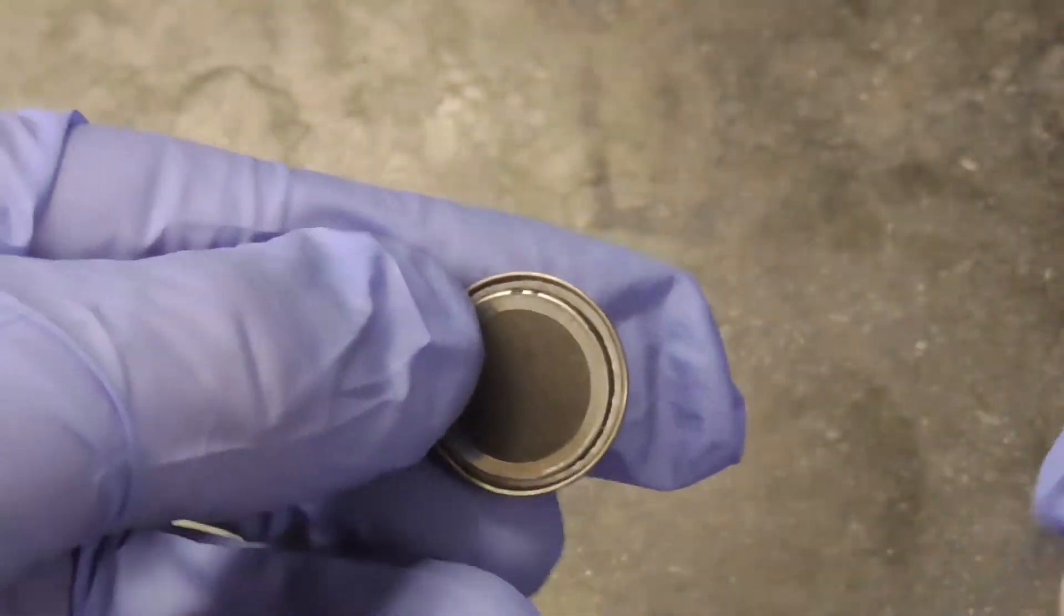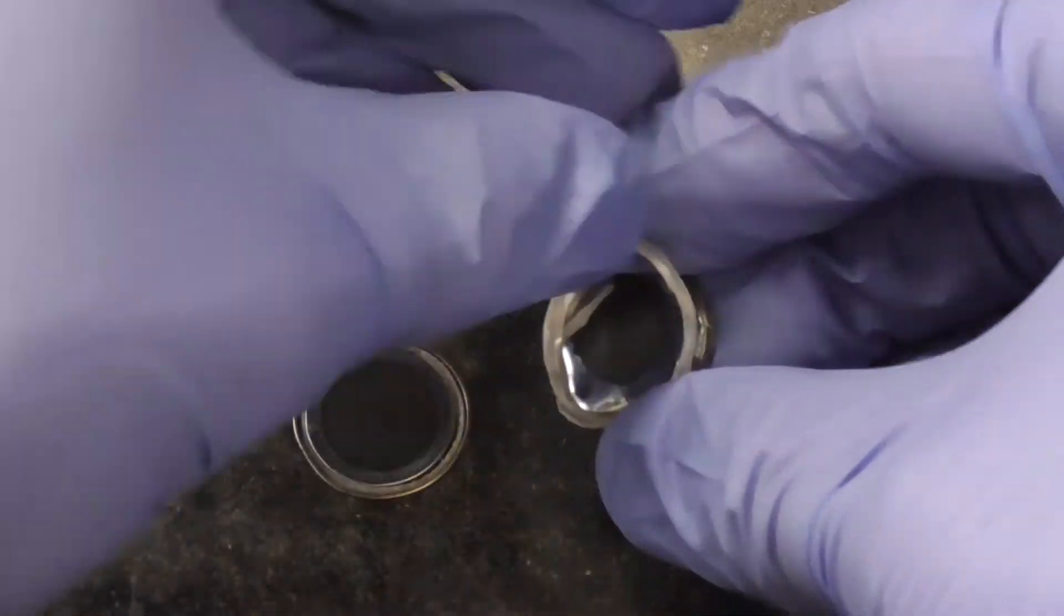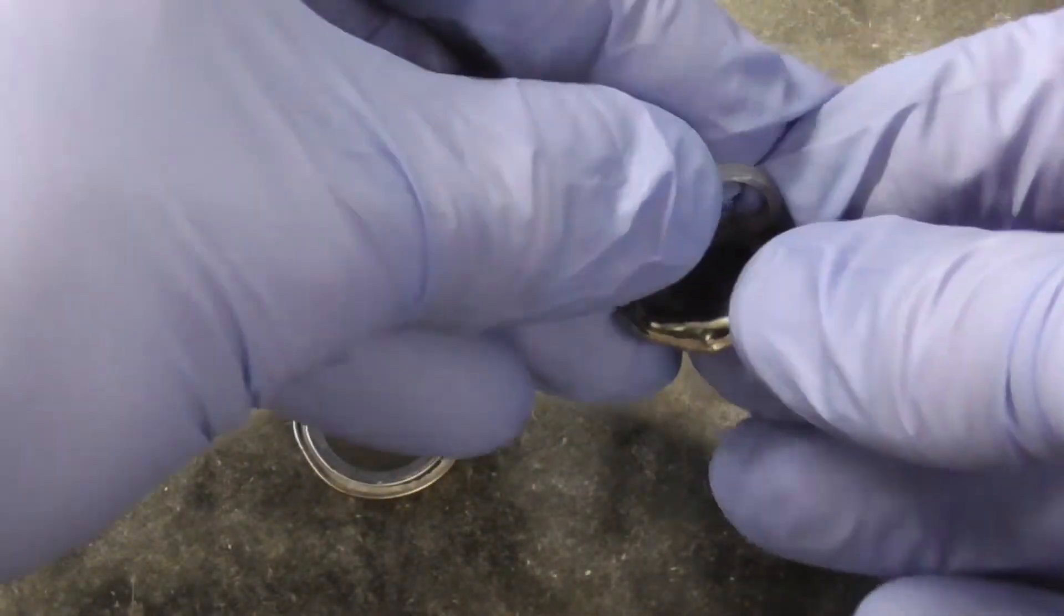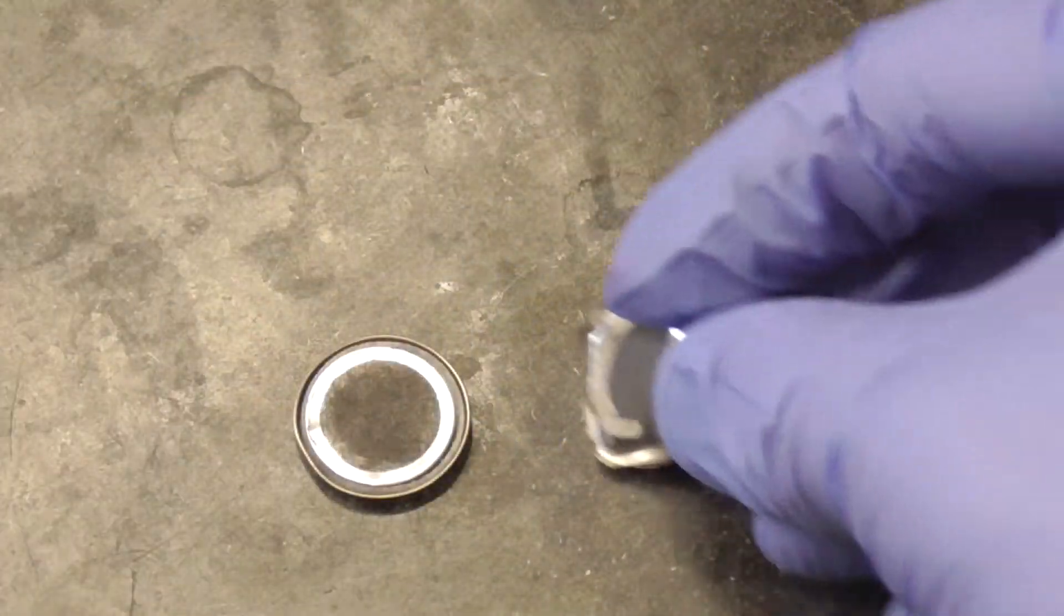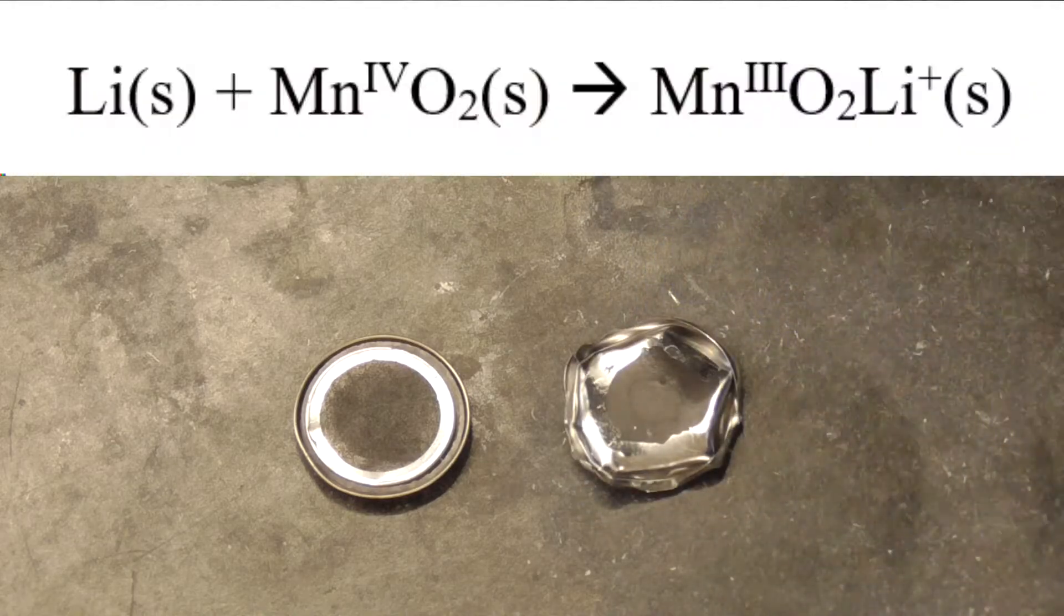Take a look at this black powder. It looks a lot like manganese dioxide. If that's what this chemical is, the chemical reaction that powers this coin battery is something like the equation that you see on the screen.